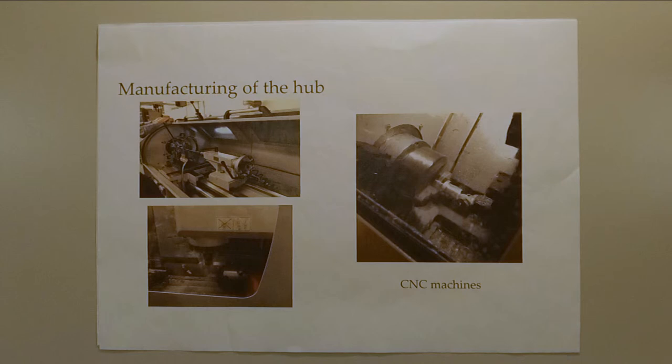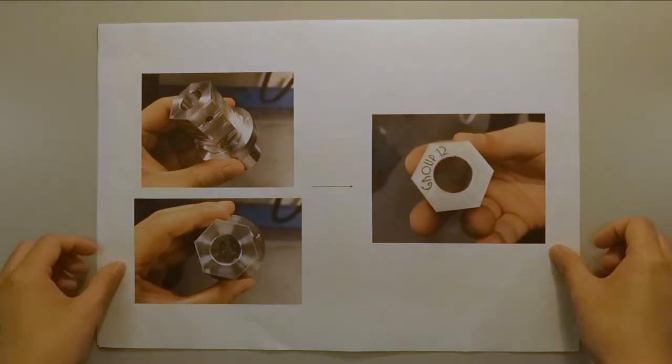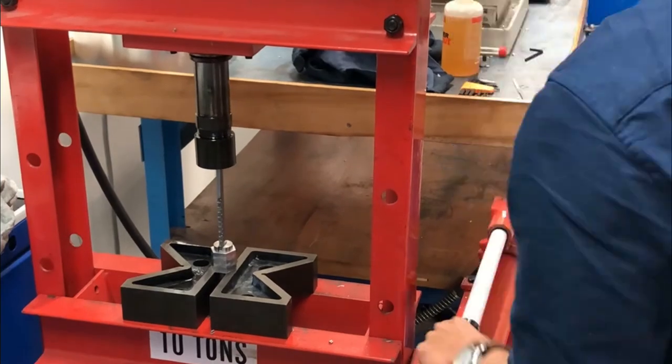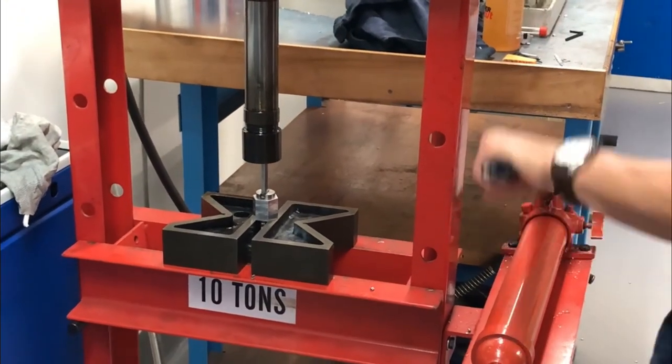It was then cut into the desired hexagonal shape by the CNC milling machine. The hub was parted up from the rest of the material and engraved with our group number. Finally, a QA broach machine connected to a hydraulic press was used to finish off the hub manually.